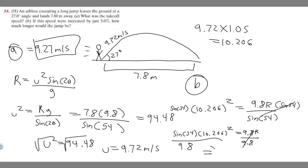If you plug that in your calculator, you're going to get that R equals 8.6. So our new distance is 8.6 meters. With the 5% improvement, we're going to travel 8.6 meters.